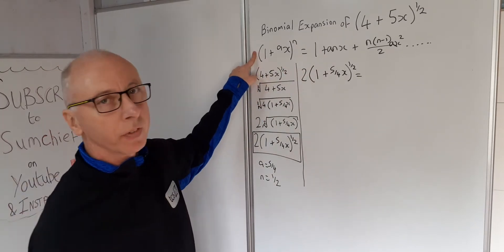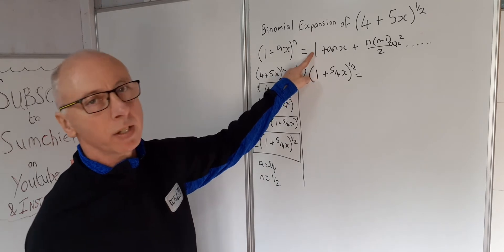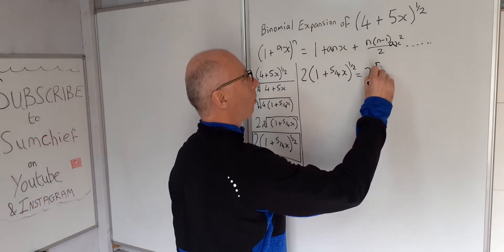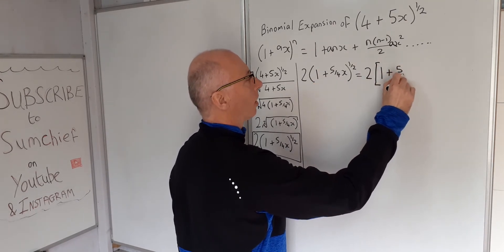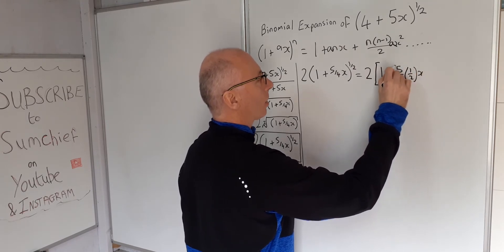Now this doesn't have the 2 in front of it, but to make it the same, we multiply this side by 2, we multiply this side by 2. So 2 times 1 plus, a is 5 over 4, n is a half, and then the x just stays.